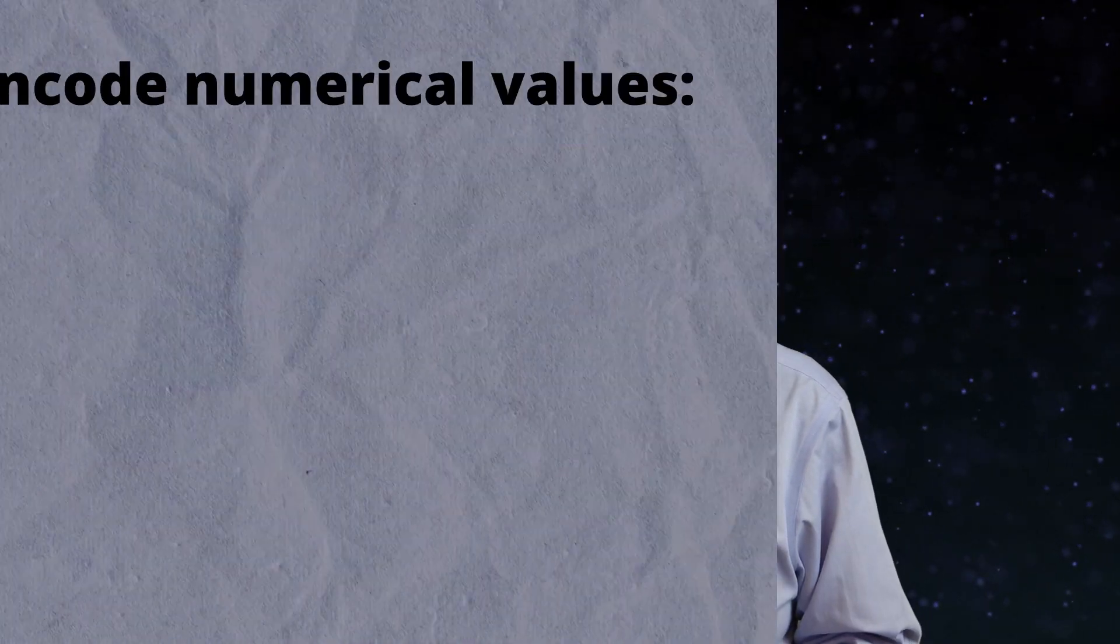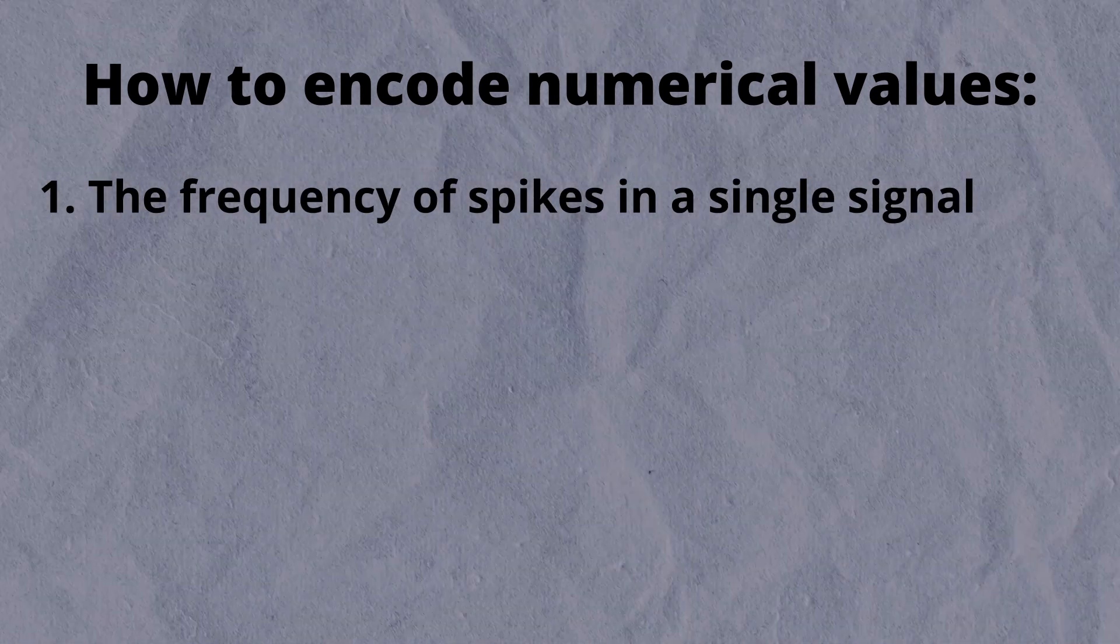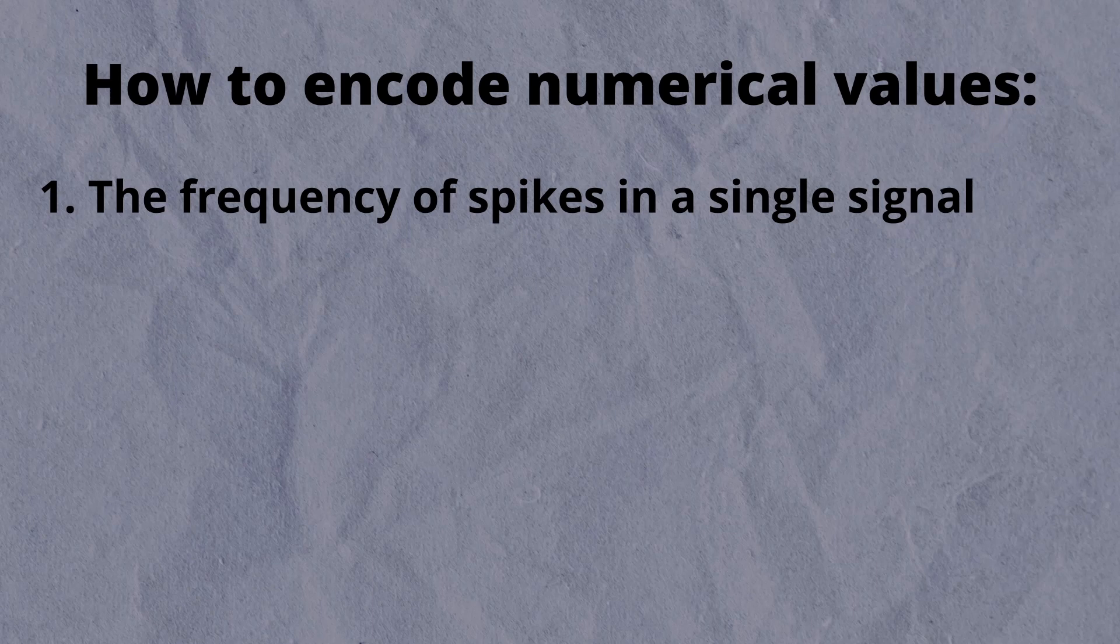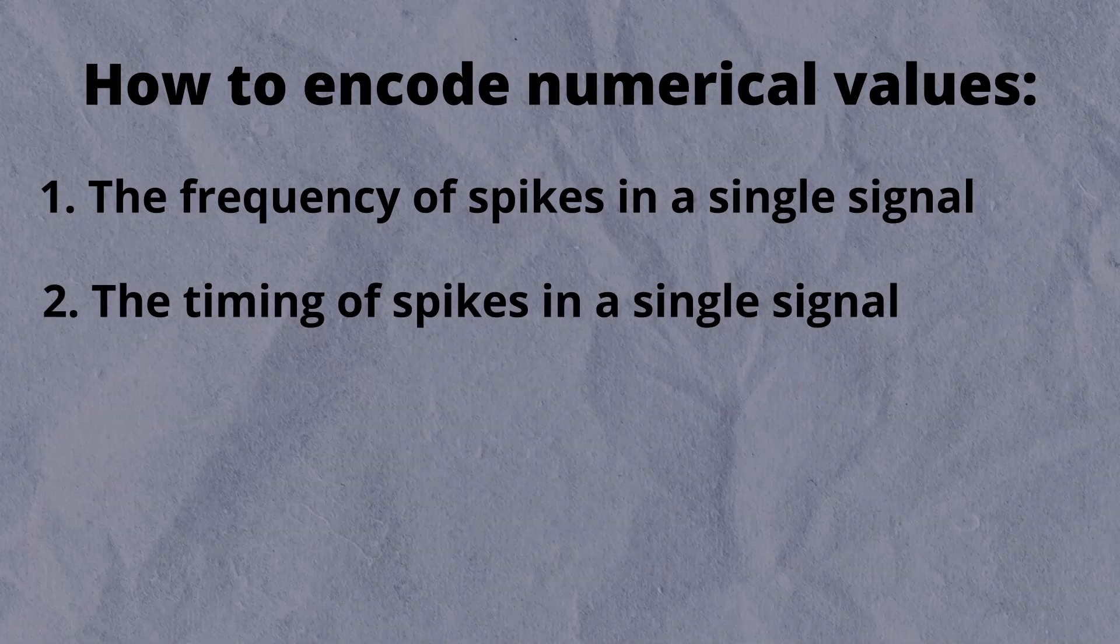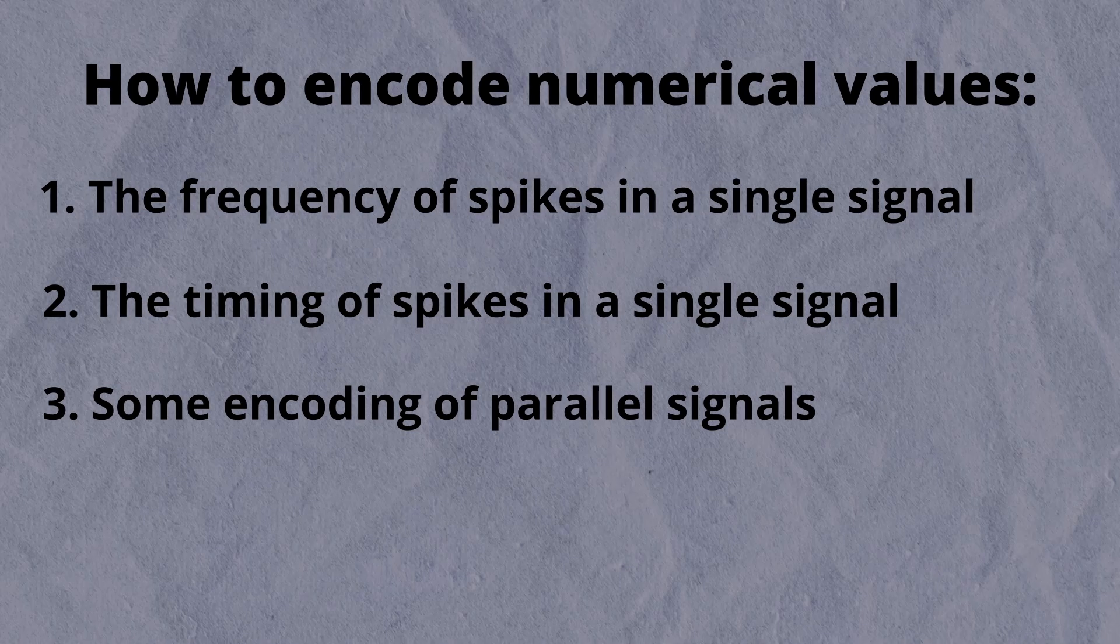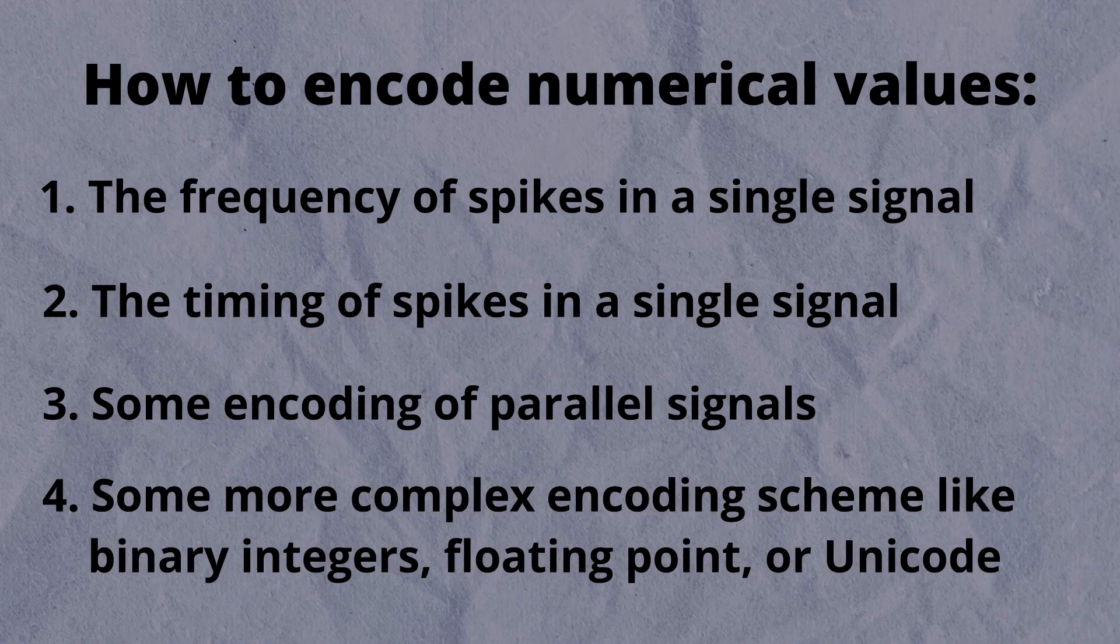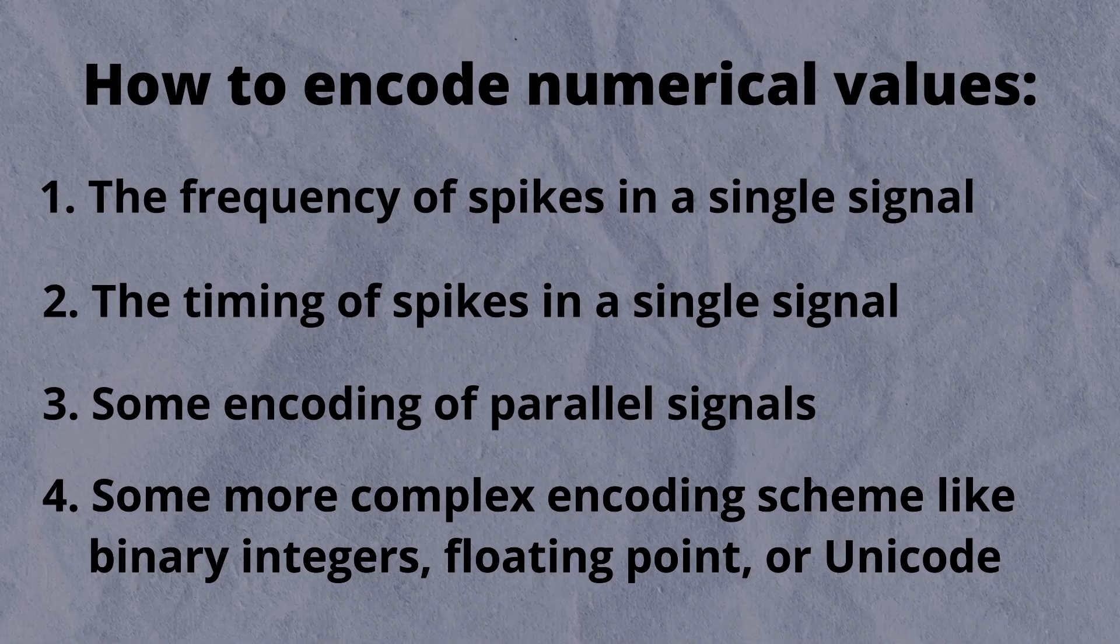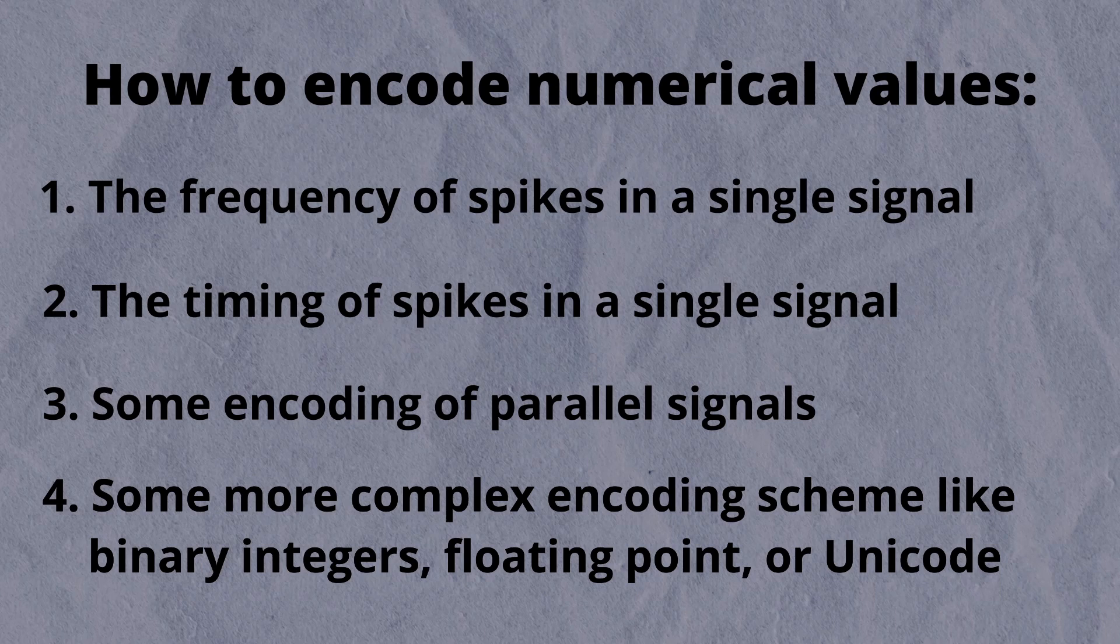Given such components, there are a number of ways to encode numerical values. First, the frequency of spikes, or bits, in a single serial signal. Second, the timing of spikes in a single signal. Third, some encoding of parallel signals. And fourth, some more complex encoding scheme like binary integers, or floating point, or unicode.